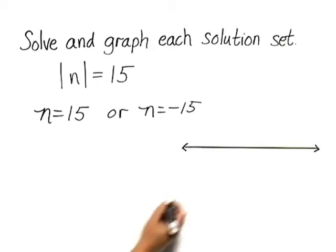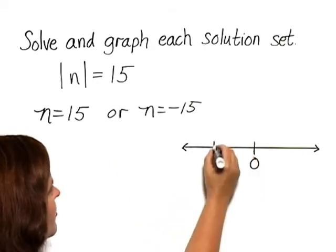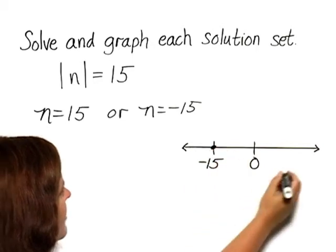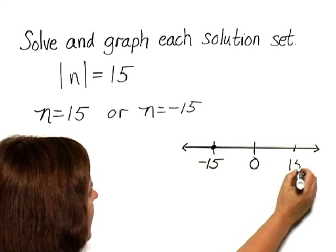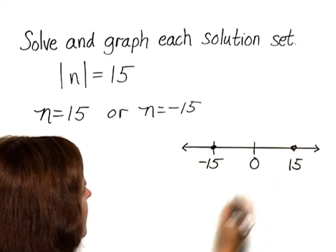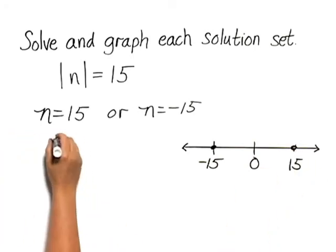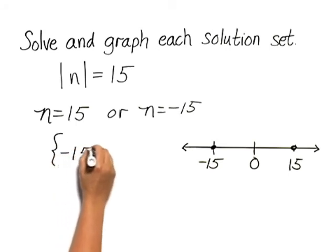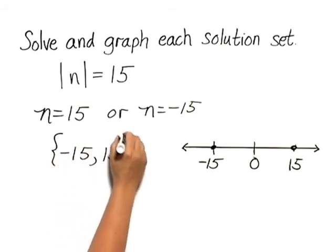To graph this, we would simply mark a dot at negative 15 and at positive 15. The solution set would be the set containing the numbers negative 15 and 15.